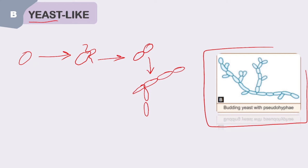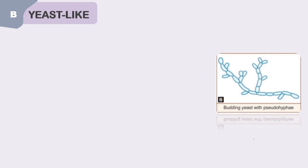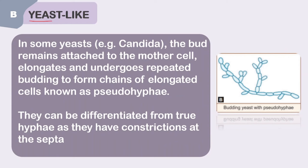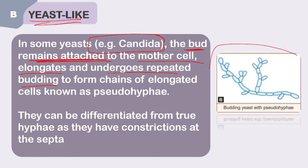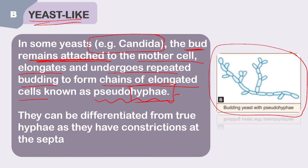This chain of elongated cells formed by repeated budding is called pseudo hyphae. The only example of yeast-like organisms is Candida. The bud remains attached to the mother cell, elongates, and undergoes repeated budding to form chains of elongated cells — that is what is referred to as pseudo hyphae. The term 'hyphae' refers to filaments, and 'pseudo' means false.